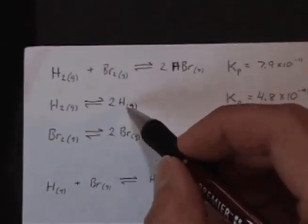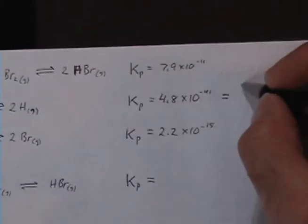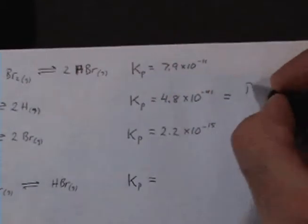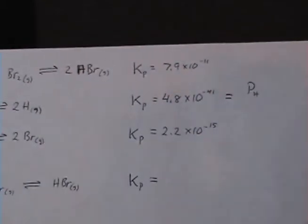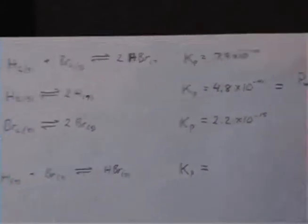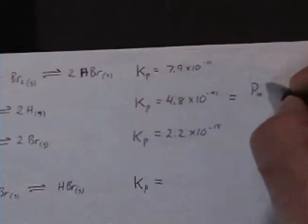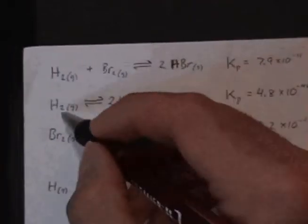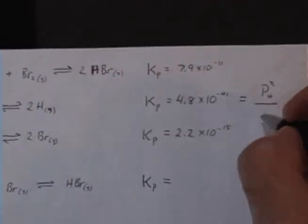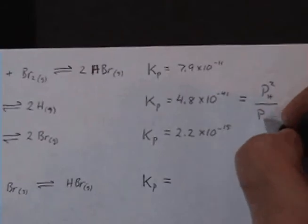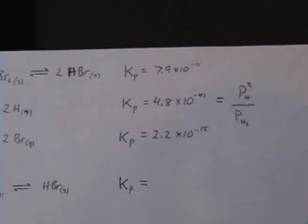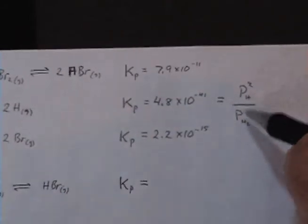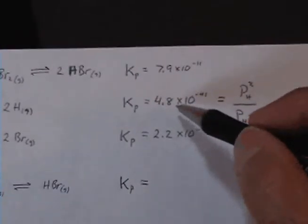This is just going to be simply the pressure of the hydrogen atoms, P sub H squared, divided by the pressure of the hydrogen gas. Alright, so this is the expression for our Kp there.